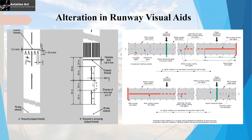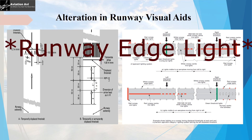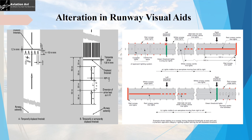Now that we have displaced our threshold, we must provide sufficient visual aids to the pilot approaching the runway to indicate the threshold is displaced. This is done by displaced threshold markings. If a runway is displaced temporarily, one type of marking is used; if the threshold is displaced permanently, a different marking is used. The runway edge markings on the displaced portion must show red in the direction of approach, and the approach lighting system must start from 60 or 30 meters from the threshold depending on the type of approach lighting system.